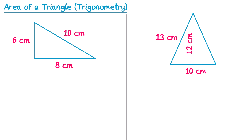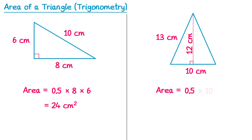You're probably already comfortable finding the area of some basic triangles. For the one on the left we do area equals one half multiplied by the base, so that's 8cm, multiplied by the perpendicular height, so that's 6cm, giving 24cm squared. For the one on the right we do one half multiplied by 10 multiplied by 12, giving 60cm squared. Both triangles had additional information — the sloped heights of 10cm and 13cm — which we didn't need, because we want the perpendicular height that makes a right angle to the base.